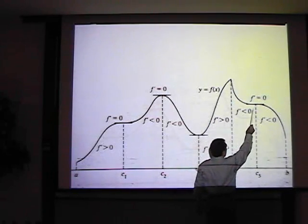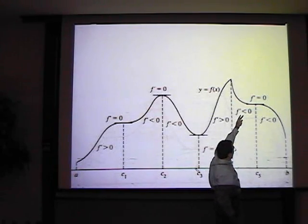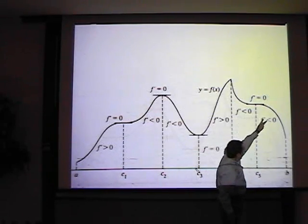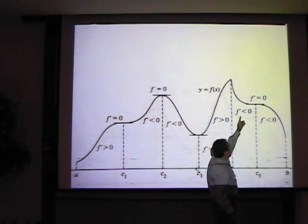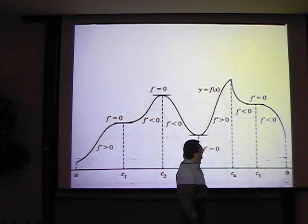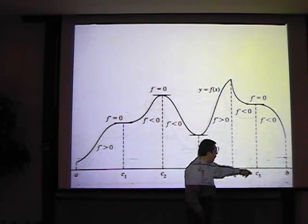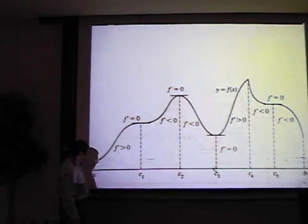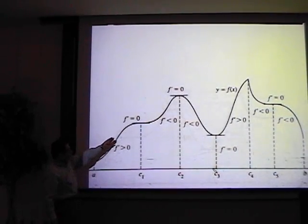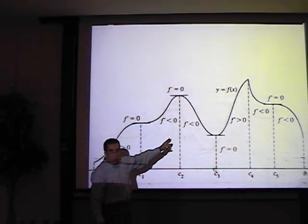Going to c5, the slopes of the tangent lines are negative before and still negative after — from negative to negative, we have no relative extreme value at c5. As you know, all relative minimum and maximum points occur at the critical points.